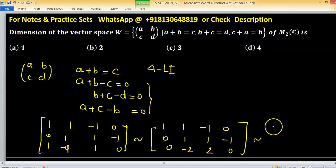Now again apply elementary row operation: one, one, minus one, zero; zero, one, one, minus one. To make this entry zero, multiply second row by two and add them, so zero, zero, four, minus two.